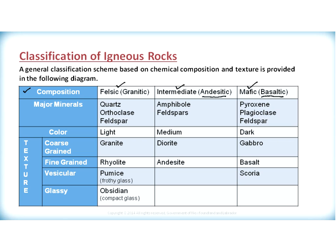The main minerals found in felsic rocks are quartz and orthoclase feldspar, which are generally light in color. Intermediate rocks such as andesite contain amphibole and plagioclase feldspar — a mix of light and dark giving an intermediate color. In mafic rocks we see pyroxene, plagioclase feldspar, and on the ultramafic side of the composition, olivine. These rocks are generally dark in color. So felsic composition is light in color, intermediate composition is medium color, and mafic is characterized by dark-colored minerals.